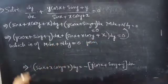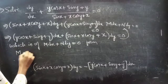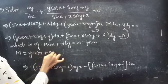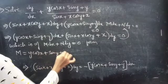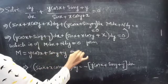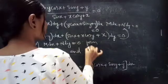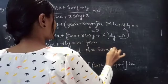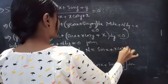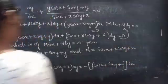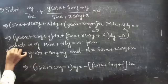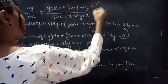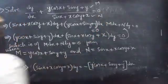By comparing these two, we get M = y·cos(x) + sin(y) + y, and N = sin(x) + x·cos(y) + x.